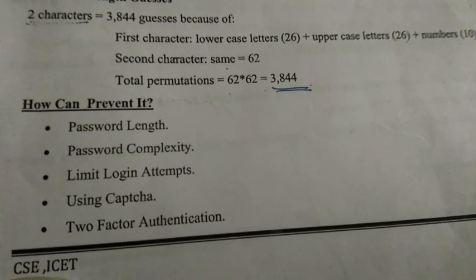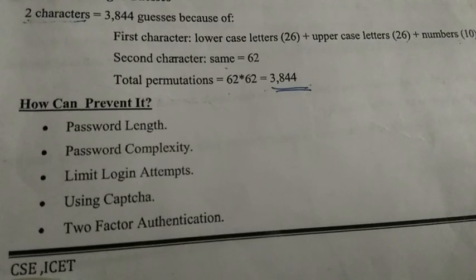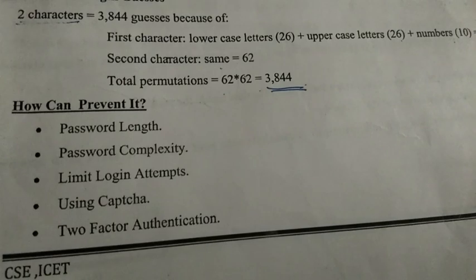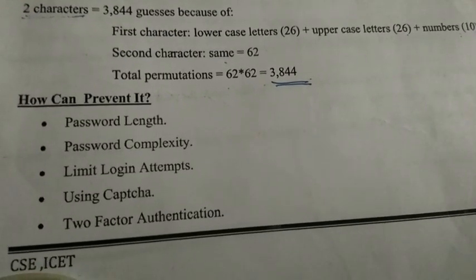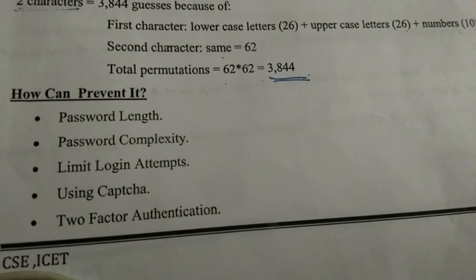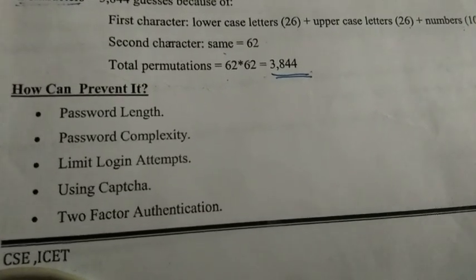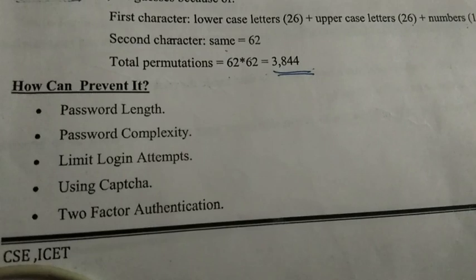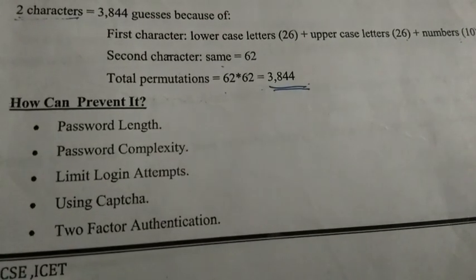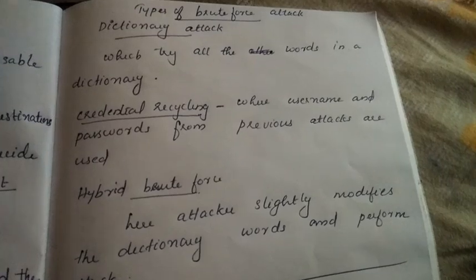Next, limit login attempts. That means if you try to log in and enter the wrong password 3 times, access is restricted. Next, use CAPTCHA — by requiring the correct answer, we can prevent automated attacks. Next is two-factor authentication, which means using 2 authentication methods in order to gain access.